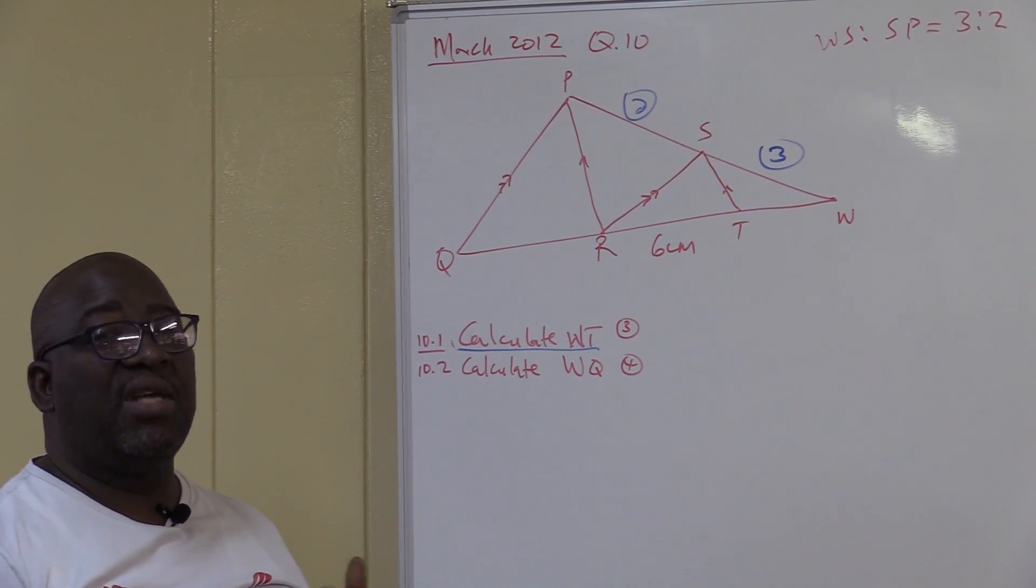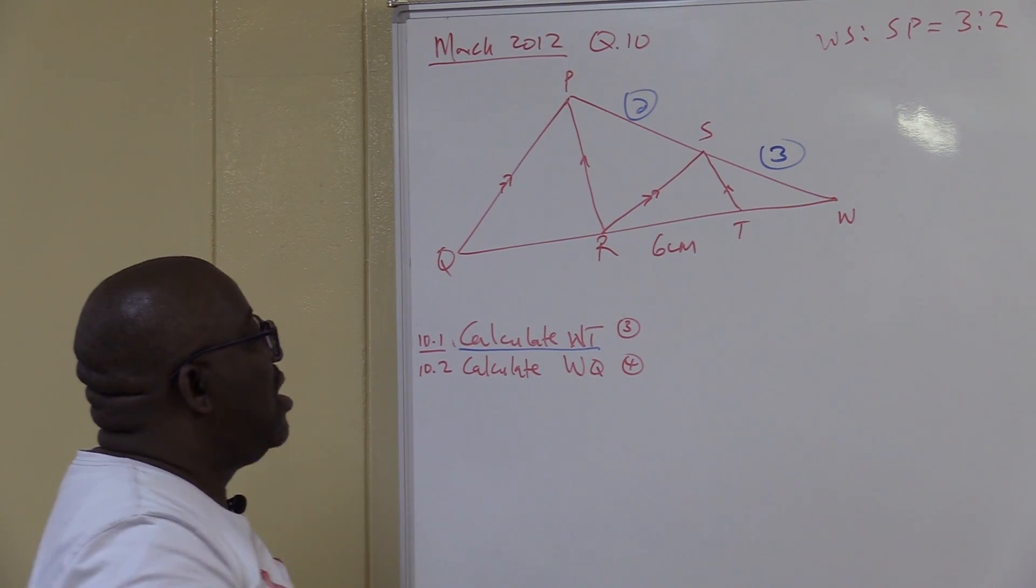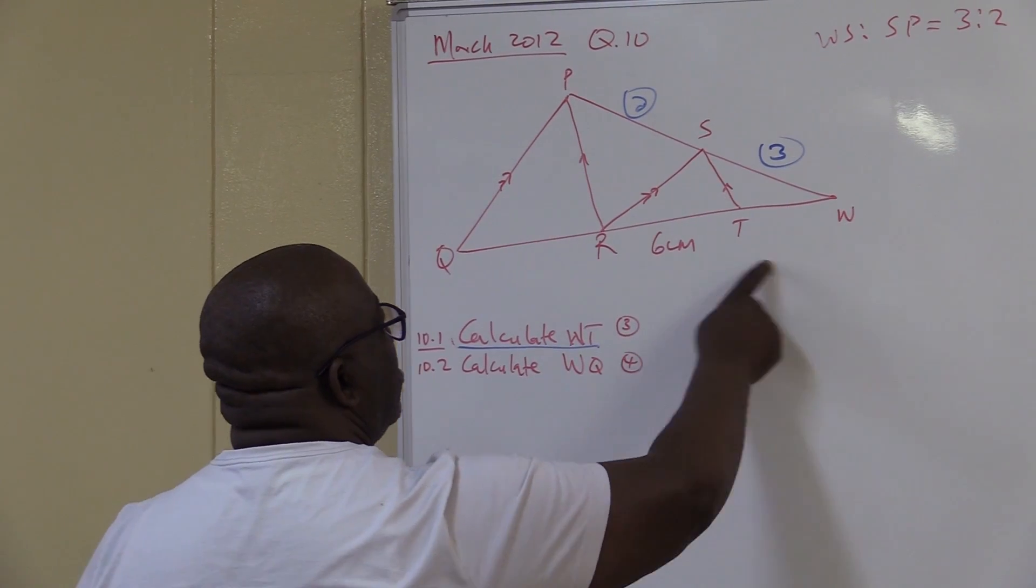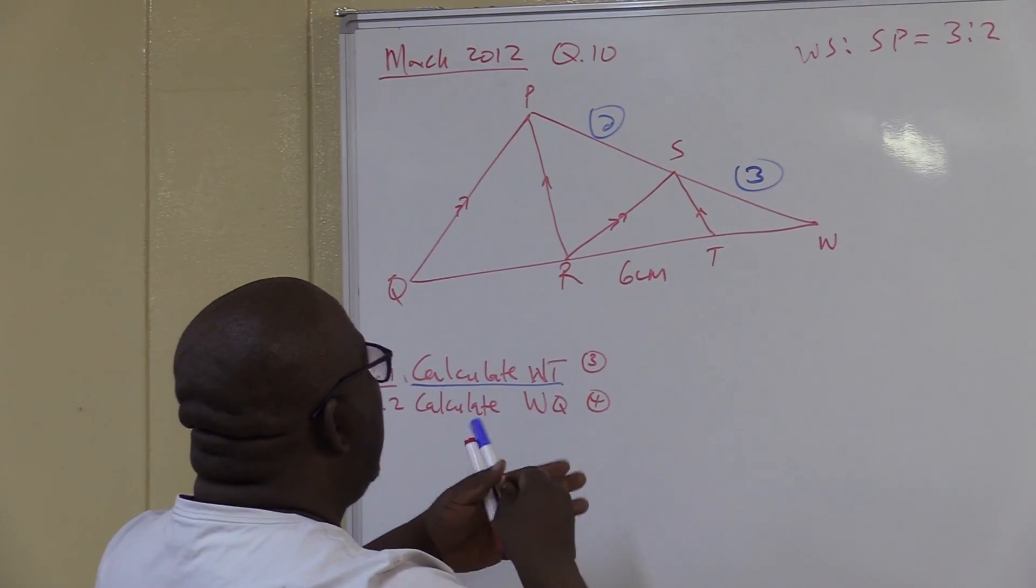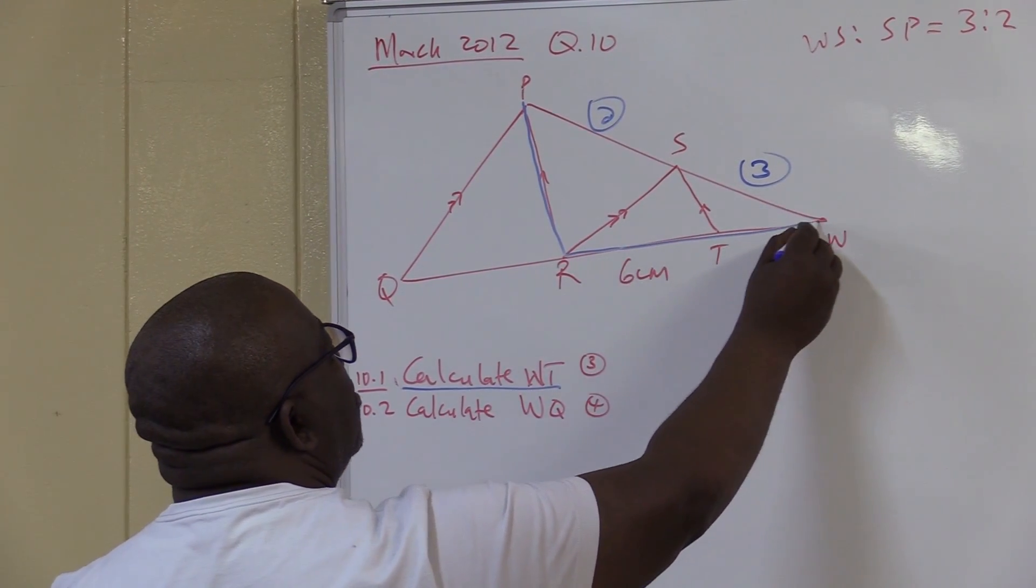It's all about theorems. Either we deal with proportionality theorem or similarity theorem. In this particular case, let's look at W. We're looking for WT. Now watch here. There is a triangle here. This is the triangle that I want us to look at.